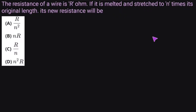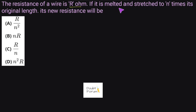Hello friends, welcome to Doubt Forum. The question is: the resistance of a wire is R ohms. If it is melted and stretched to n times its original length, its new resistance will be — and four options are given.